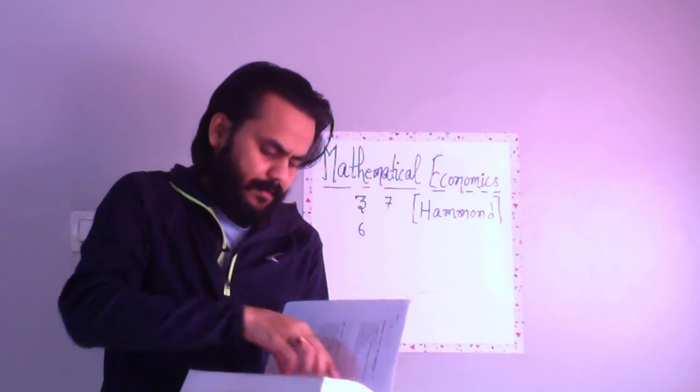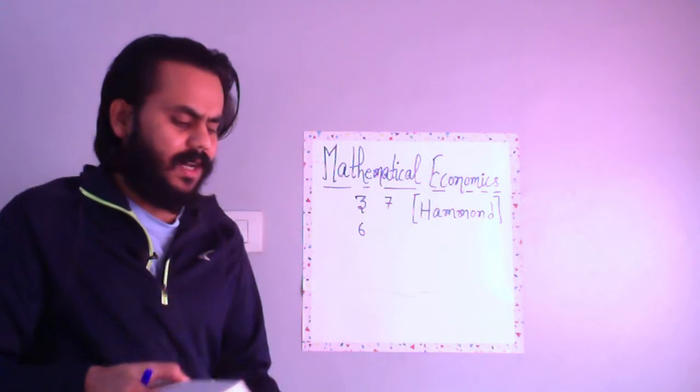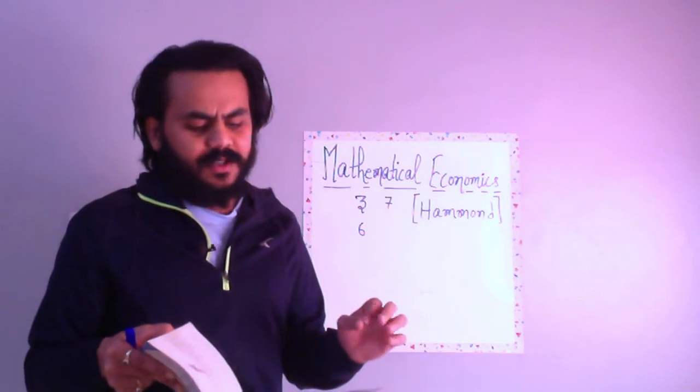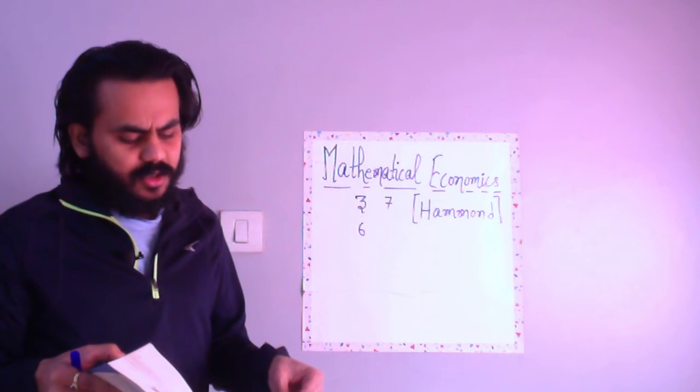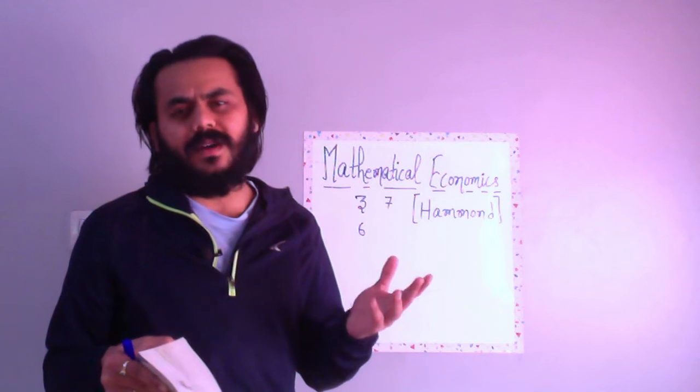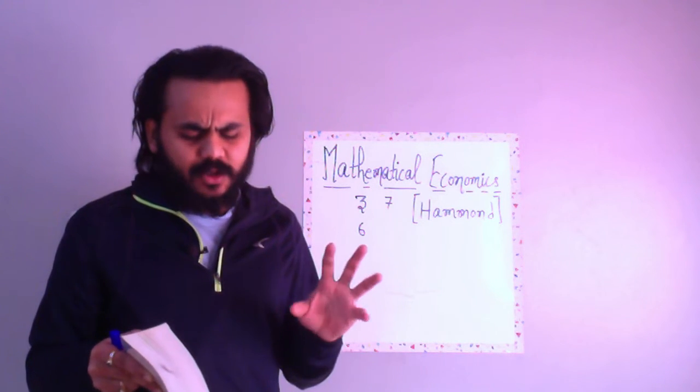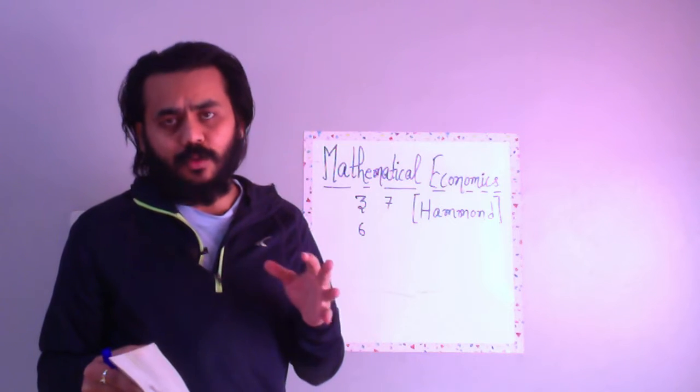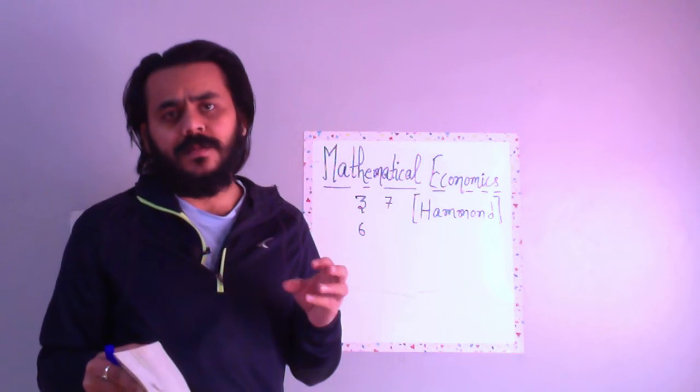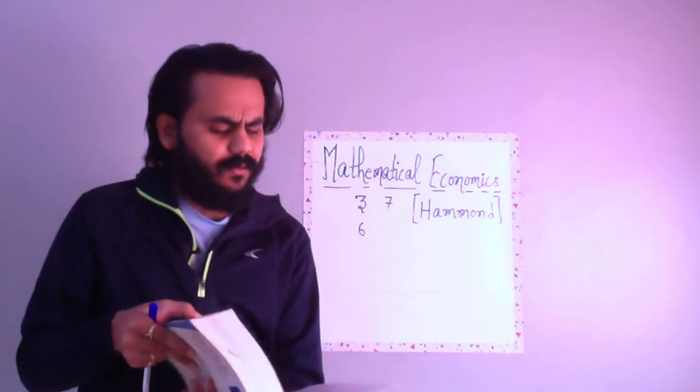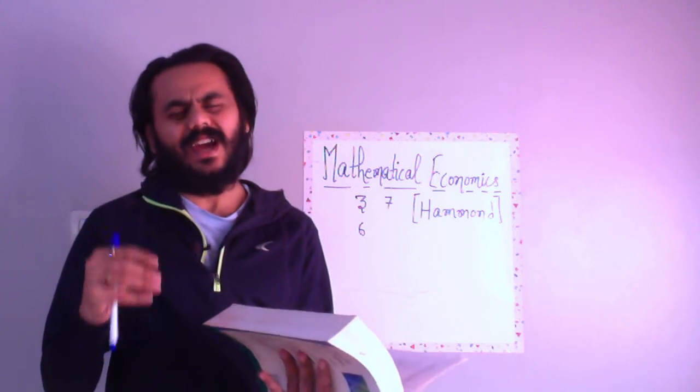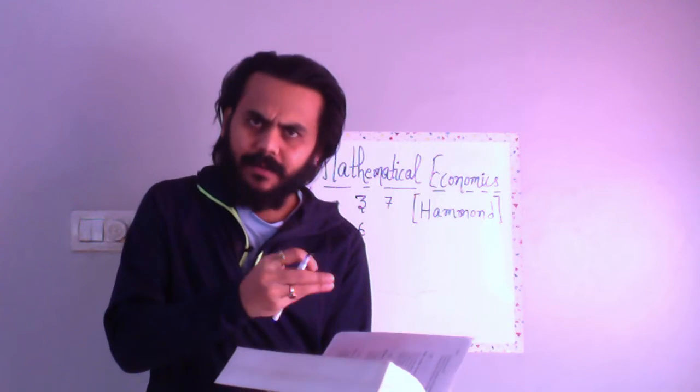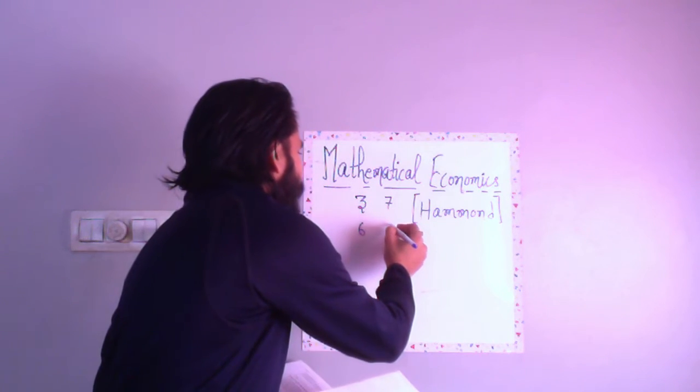Then you have chapter nine on single variable optimization. You already know how to calculate maxima and minima using differentiation, but there is commentary on inflection points, concave and convex functions which needs hands-on. If your J math syllabus is very perfect, you don't need to read chapter nine, but let's not leave anything.